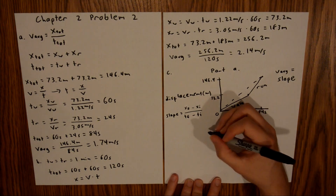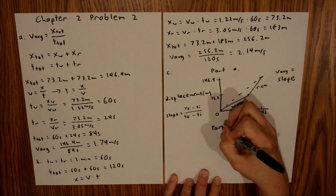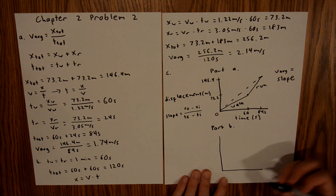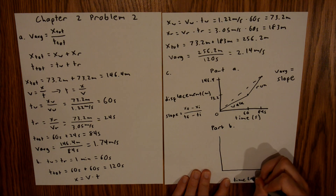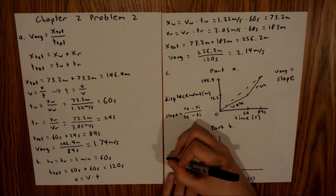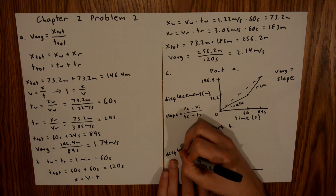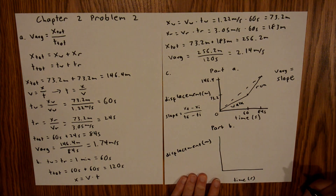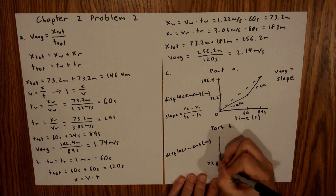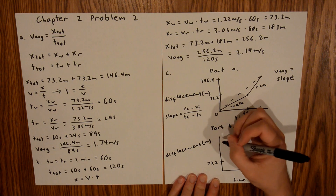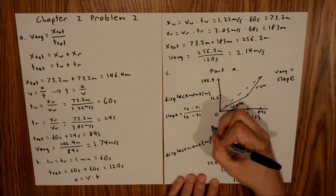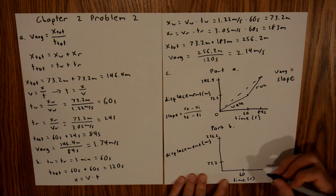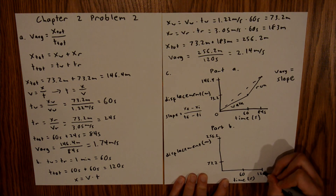Now we can graph Part B, which will look very similar to the first graph. Again, we have time on the x-axis and displacement on the y-axis. I'll mark the important points: 73.2 meters after walking, and then our total of 256.2 meters. Then 60 seconds for the time it takes to walk, and the total time of 120 seconds.